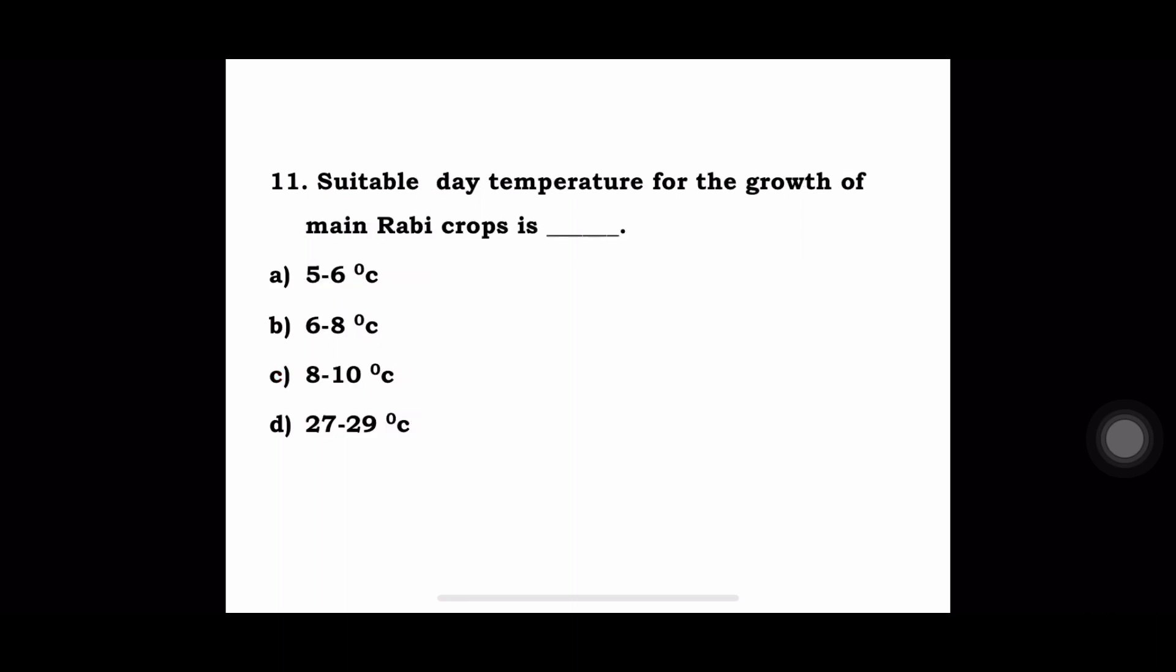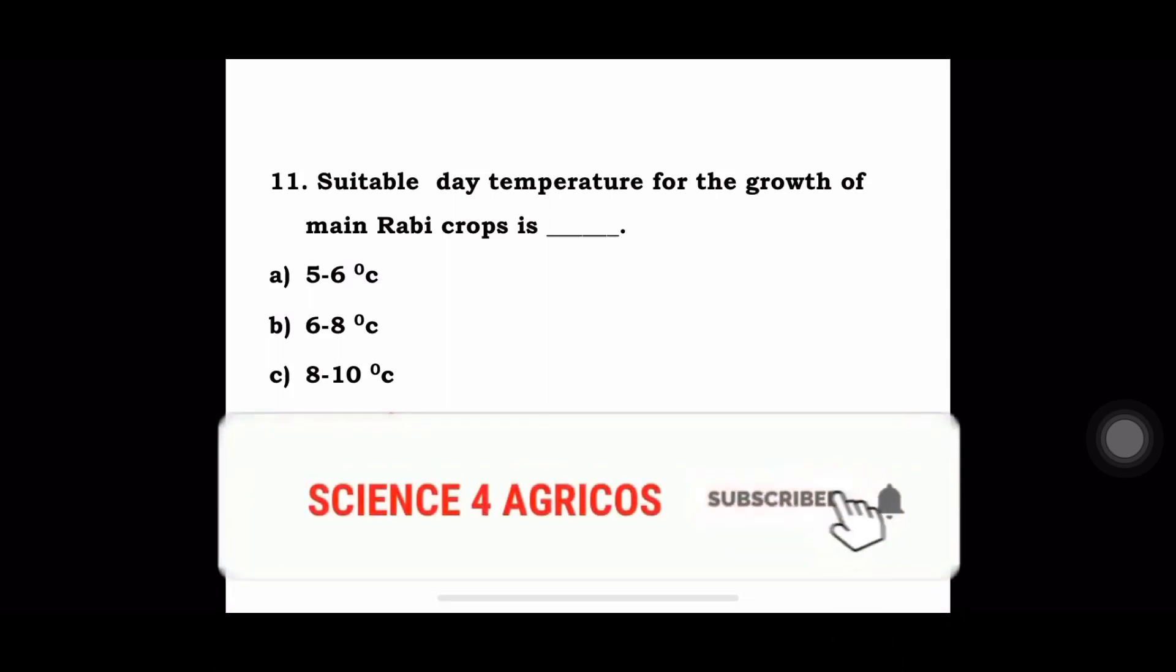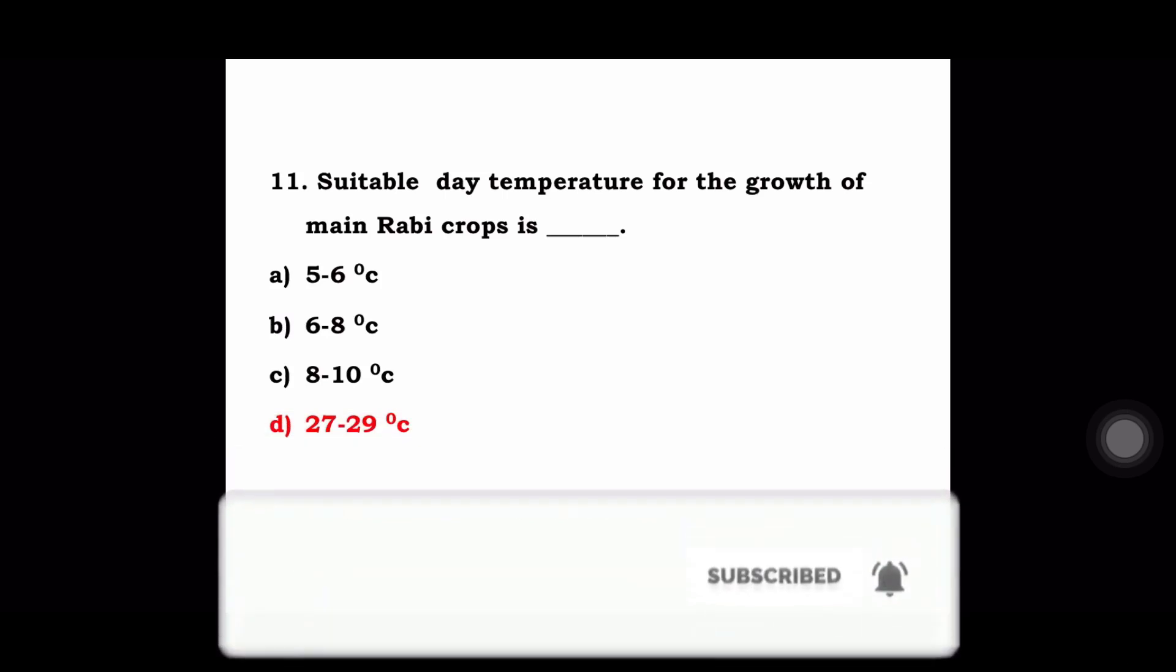Next question: suitable day temperature for the growth of main rabi crops is? a) 5-6 degree centigrade, b) 6-8 degree centigrade, c) 8-10 degree centigrade, d) 27-29 degree centigrade. The answer is 27-29 degree centigrade is the suitable day temperature for the growth of main rabi crops.